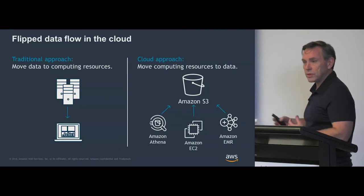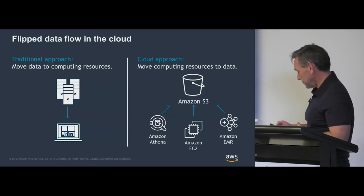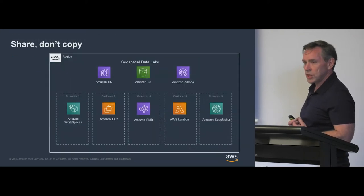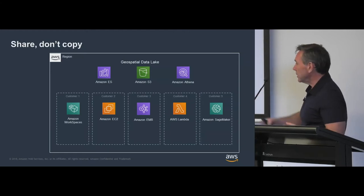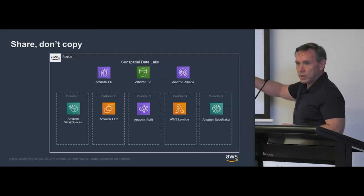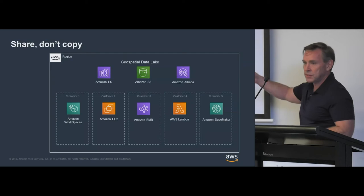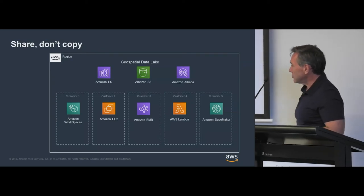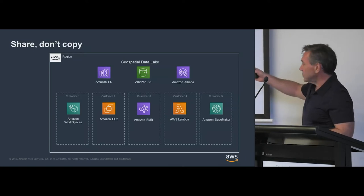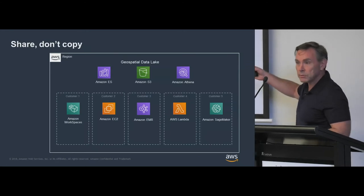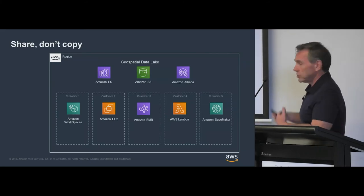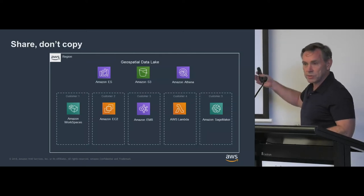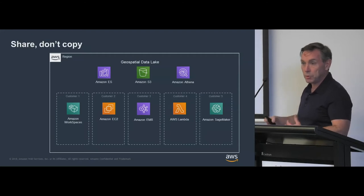The key phrase is 'share, don't copy.' By publishing data once from producers and consuming it globally across your choice of infrastructure — whether that's virtual desktops with multiple GPUs for heavy visualization, EC2 instances, MapReduce, serverless Lambda functions where you write Python with geospatial libraries and reference S3 directly, or machine learning training on S3 data — you avoid duplicating data movement.